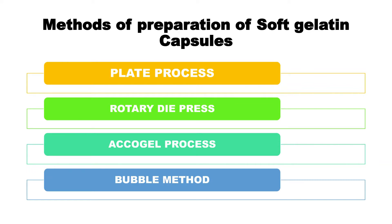The first is the plate process, which is the oldest process. Second is the rotary die process. Third is the aquagel process, and fourth is the bubble method. The rotary die process is used on the commercial scale. The aquagel process is specifically used for filling up dry powders. The plate process is now obsolete and no longer in use.